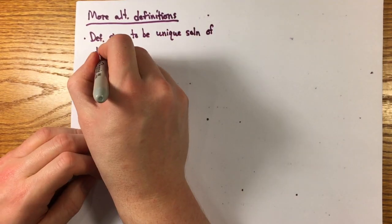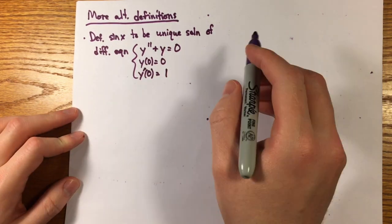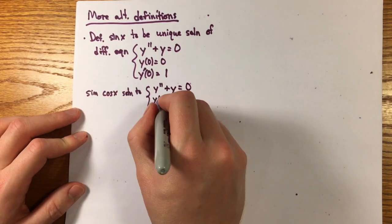One could start by defining them as the solutions to this differential equation y double prime plus y equals 0, the sine having initial conditions y of 0 equals 0, y prime of 0 equals 1.